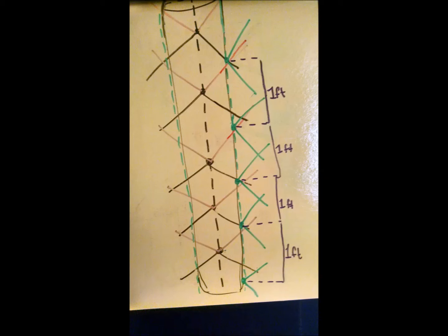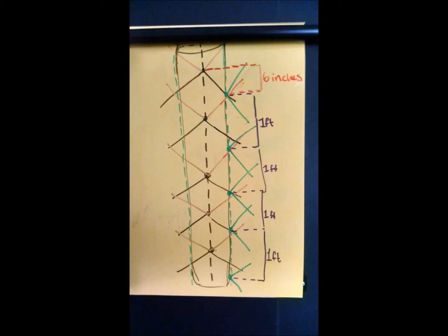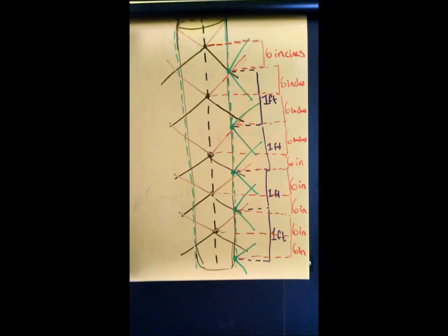And as you notice, they are actually right in between the black and the red ones. So they are six inches apart, they are six inches below the black and the red ones. And it stays consistent for all of them, as you can see.